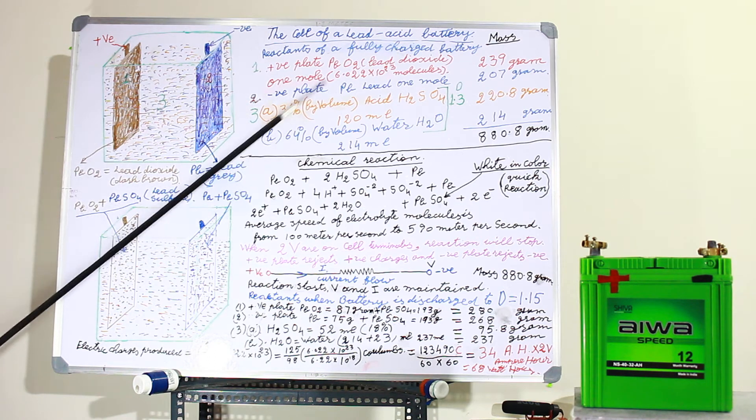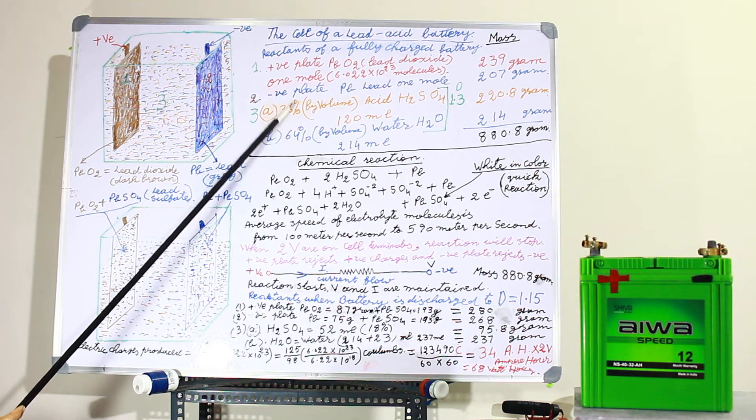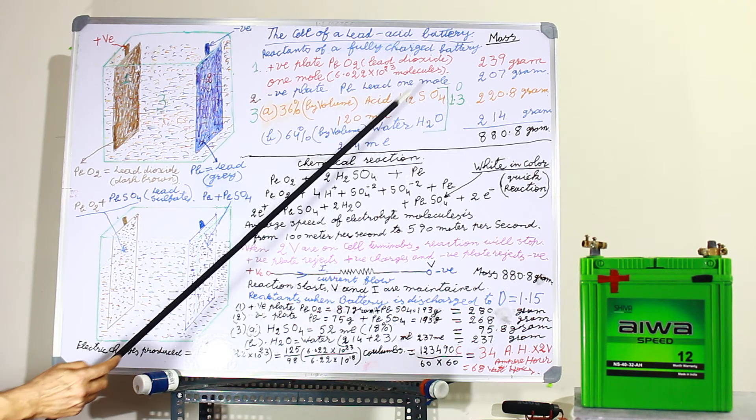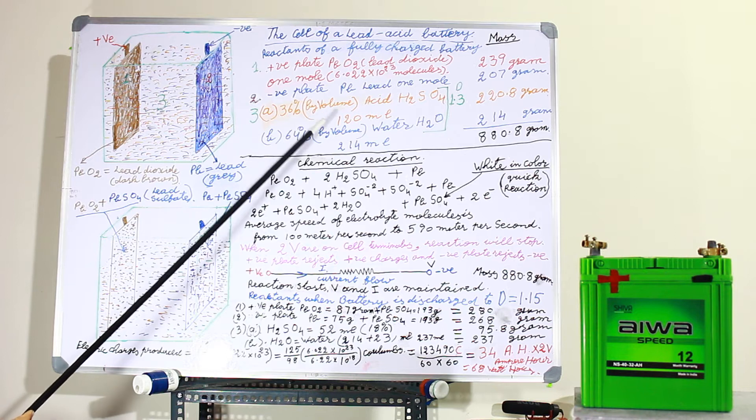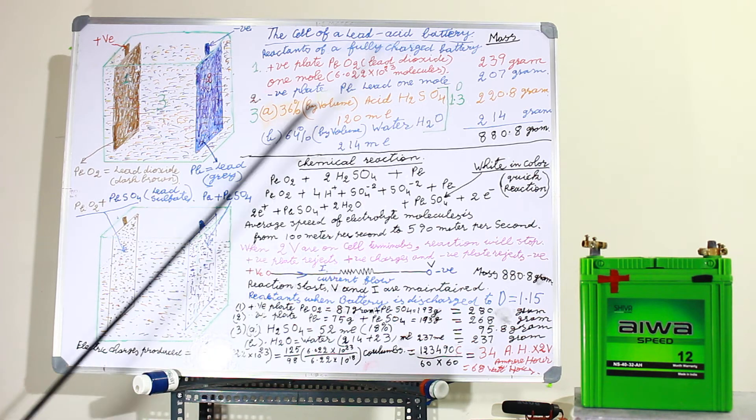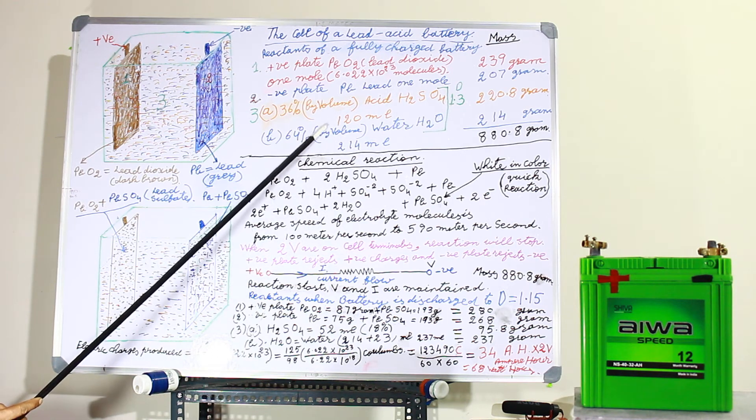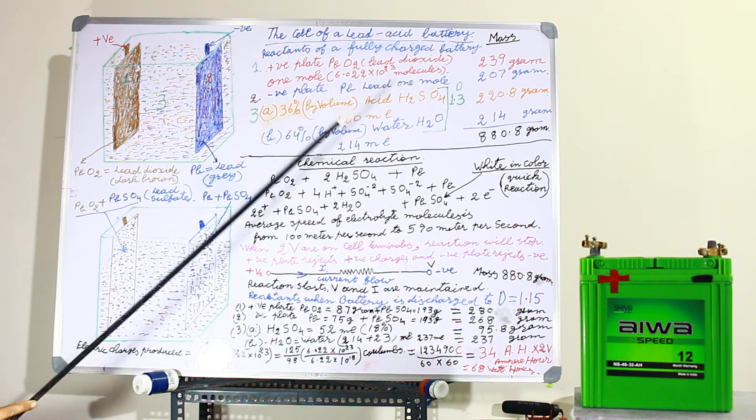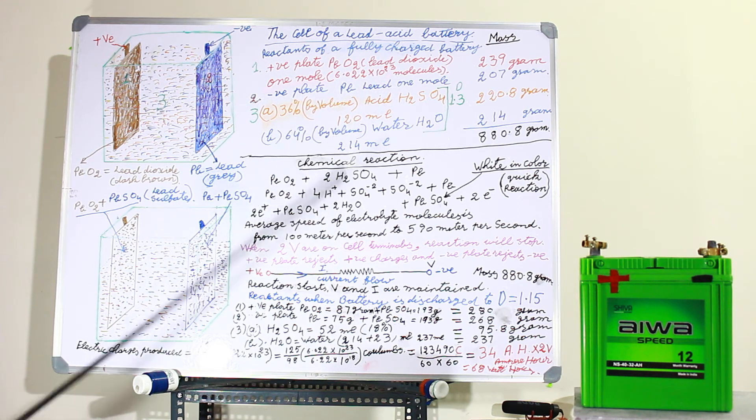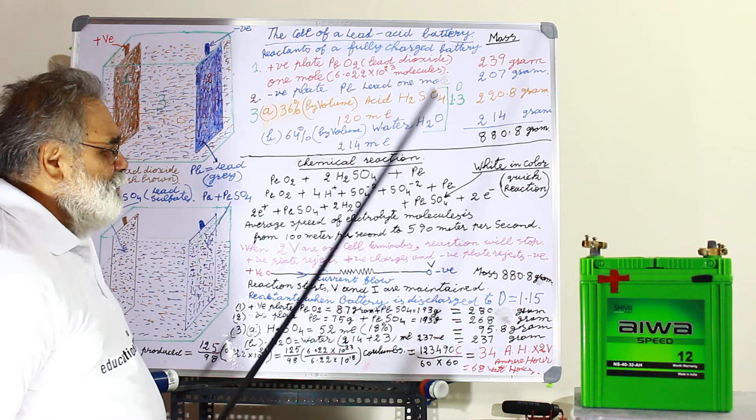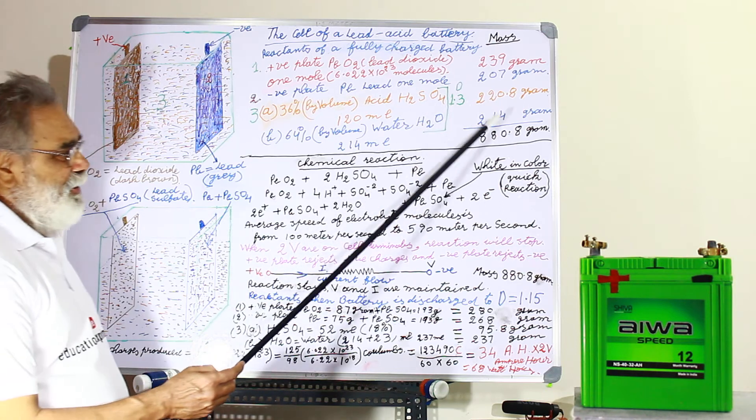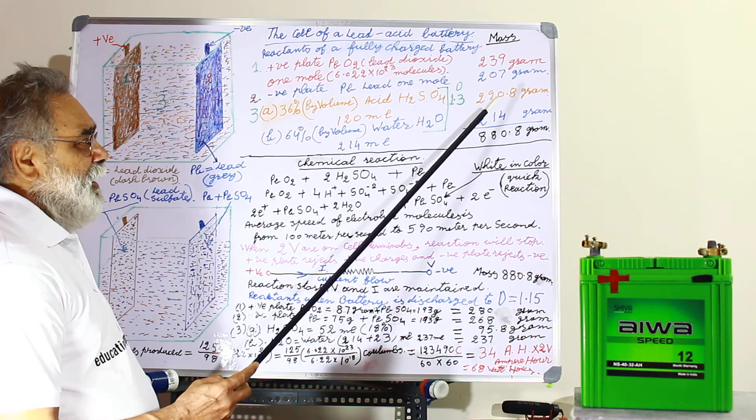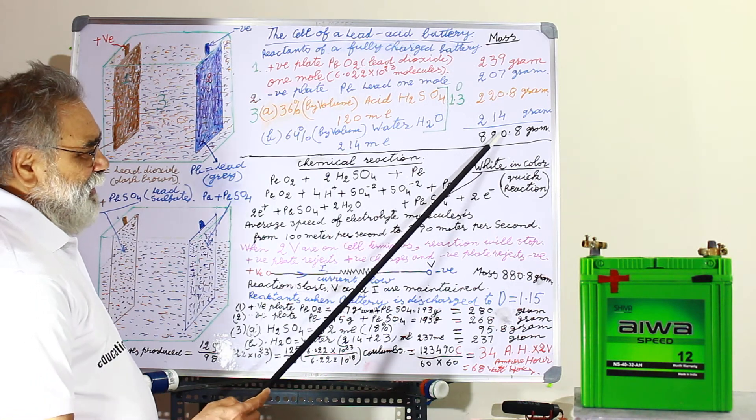Number 3 is the electrolyte. It is acid and water. 36% of it is H2SO4, sulfuric acid, by volume. And 64% by volume is water, H2O, 214 milliliters. The H2SO4 is 120 milliliters. Because the H2SO4 has density 1.84, its weight will be 220.8 grams. The density of water is 1. The total mass of the reactants will be 880.8 grams.